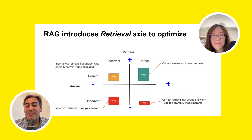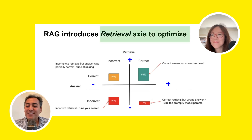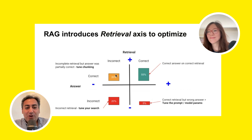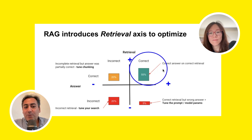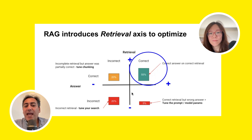When we are using RAG, we are introducing another axis — another factor into the equation that we need to optimize. This chart here explains it extremely well. It's like a 2D plane. The X-axis is the answer and the Y-axis is the retrieval. What we want is to get the correct answers and correct retrieval.